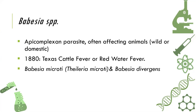Babesia species is an apicomplexan parasite and a protozoa that affects animals — wild or domestic. Babesia species was first isolated from cattle in Texas. That's why Babesia species is referred to as Texas cattle fever or red water fever.